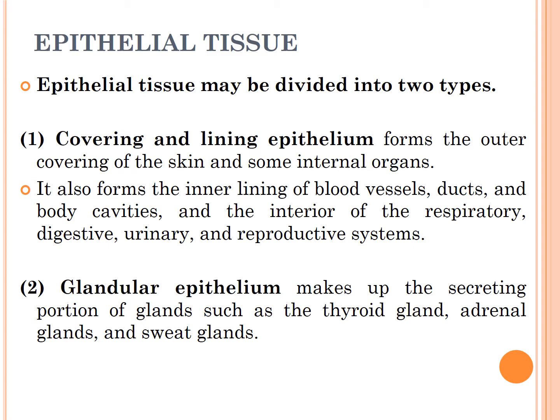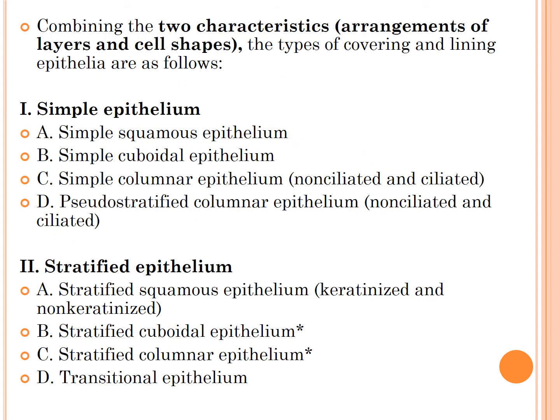Now, classification of epithelial tissue. Epithelial tissue may be divided into two types: one is covering and lining epithelial, and the second is glandular epithelial. Covering and lining epithelial forms the outer cover of the skin and some internal organs; it forms the inner lining of blood vessels, ducts, body cavities, and the interior of the respiratory, digestive, urinary, and reproductive systems.